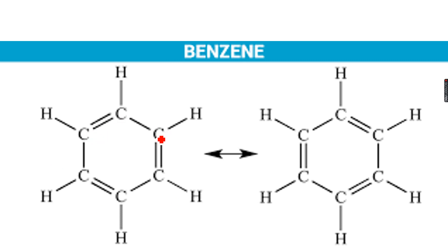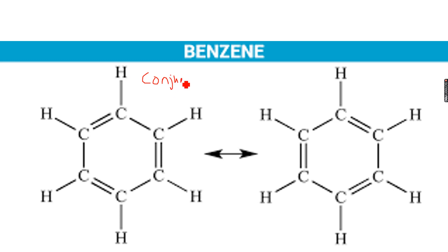So these double bonds and single bonds are alternating. When we have something like this, it's called conjugation. This phenomenon where we have alternating double bonds and single bonds is called conjugation, as you can see over here.